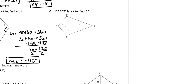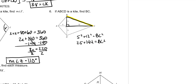We need to find the length of BC. Remember the diagonals are perpendicular, so those are 90-degree angles, giving us a right triangle. Using the Pythagorean theorem: 5 squared plus 12 squared equals BC squared. 25 plus 144 equals 169. Taking the square root of both sides, BC equals 13.